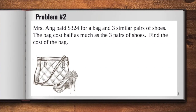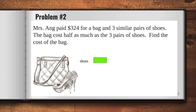Mrs. Ang paid $324 for a bag and three similar pairs of shoes. The bag cost half as much as the three pairs of shoes. Find the cost of the bag. Here in this problem, it would be easier if we draw a representation for shoes first because this was used as the reference cost of the bag. So I'll draw one unit for the shoes. How many pairs of shoes were bought? There were three pairs. Now, to find the cost of the bag, we can look for how much is half of that. So we can use this as the reference point for the cost of the bag.